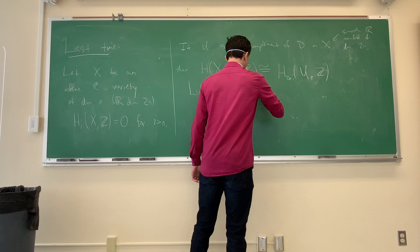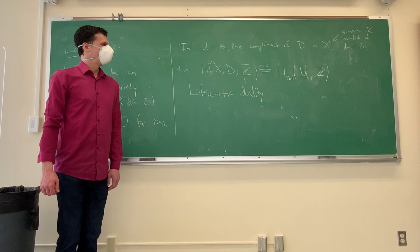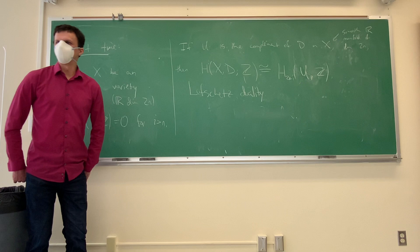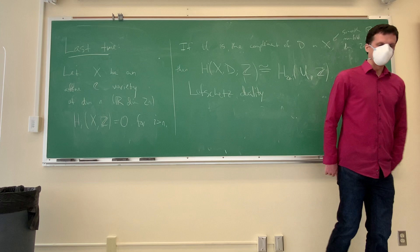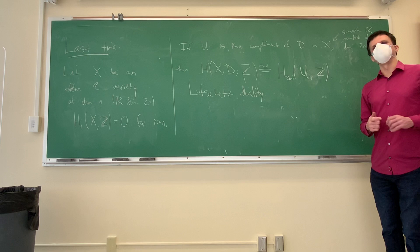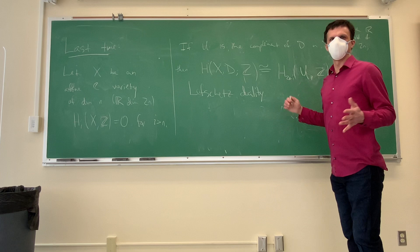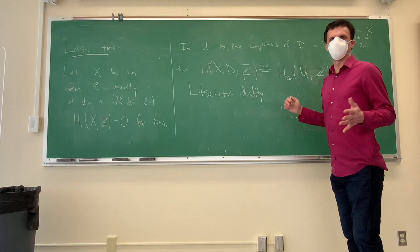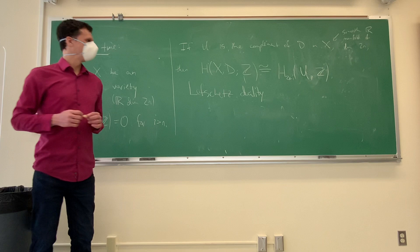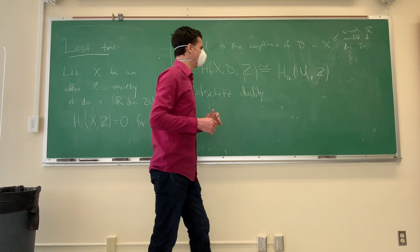It's not so surprising — the idea is that the universal coefficient theorem lets you identify homology and cohomology in the same dimension, and then Poincaré duality lets you flip dimensions. Here it's just a relative version of that: the relative cohomology between X and D is going to be given by the topological features of the complement.